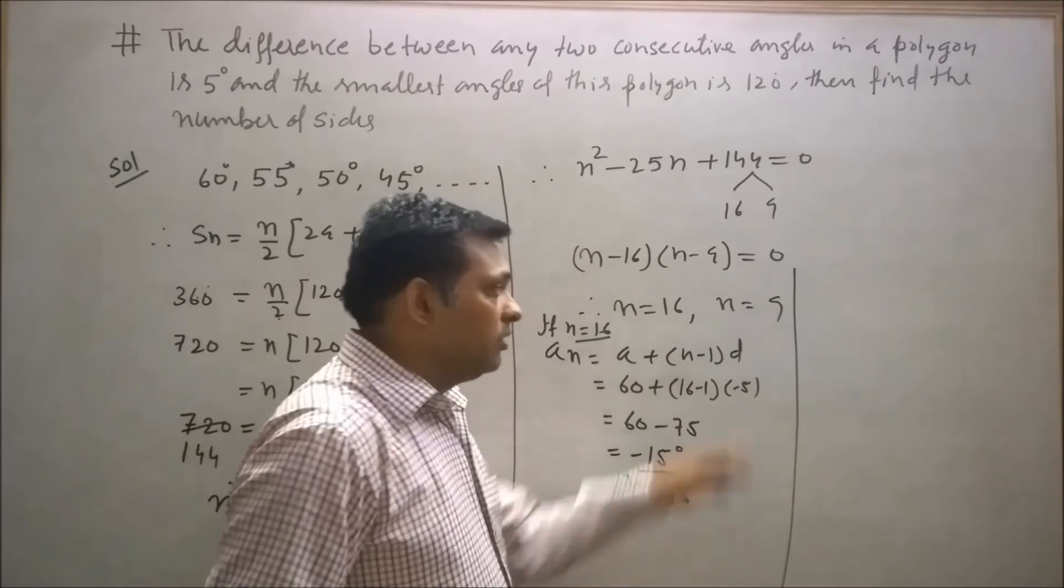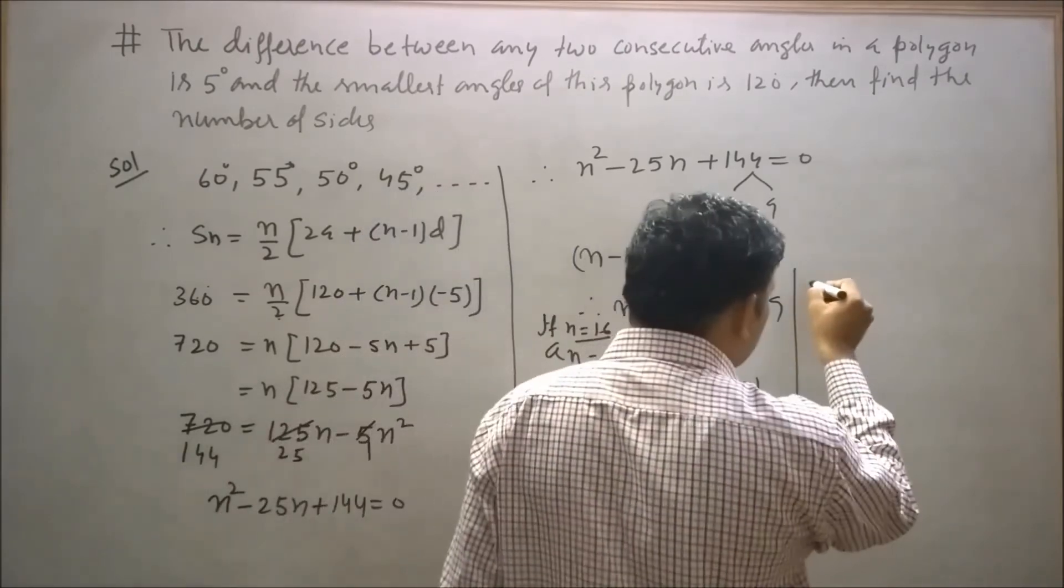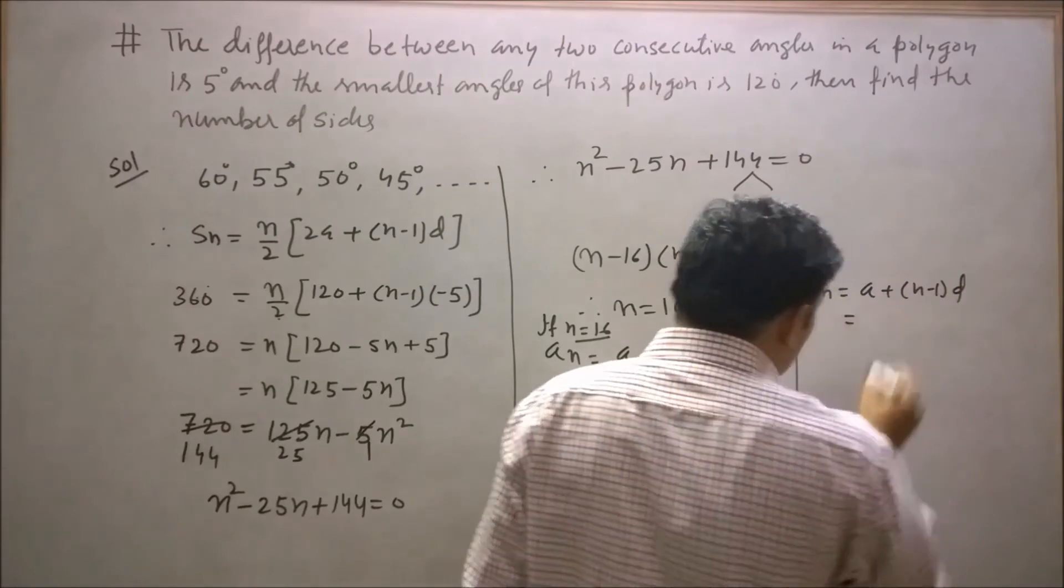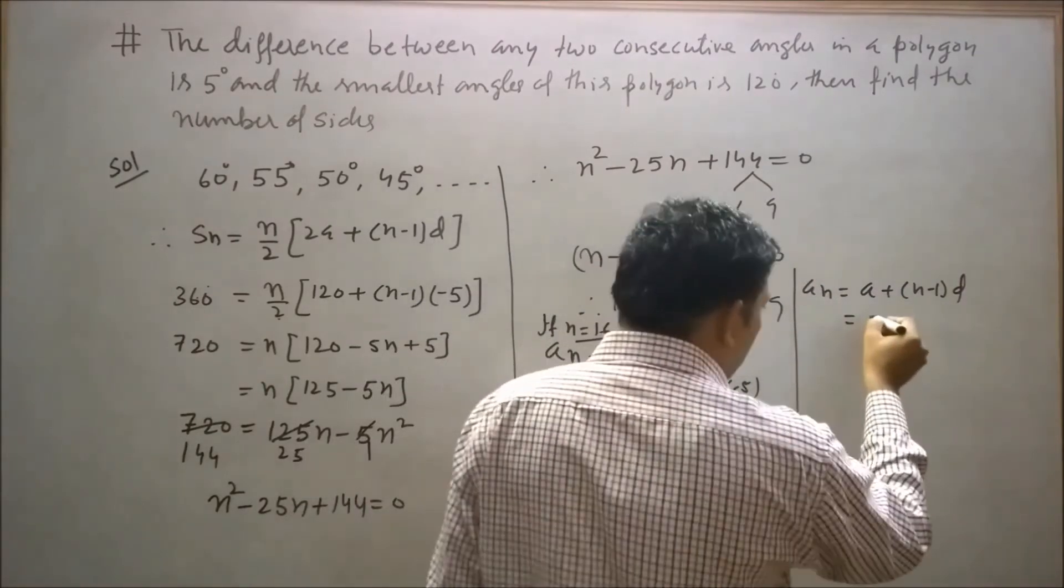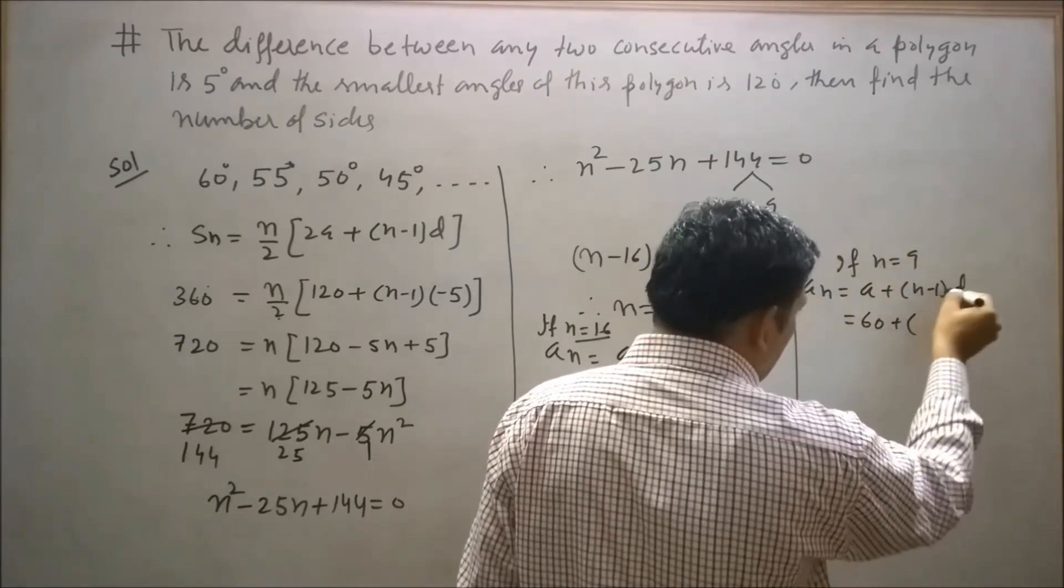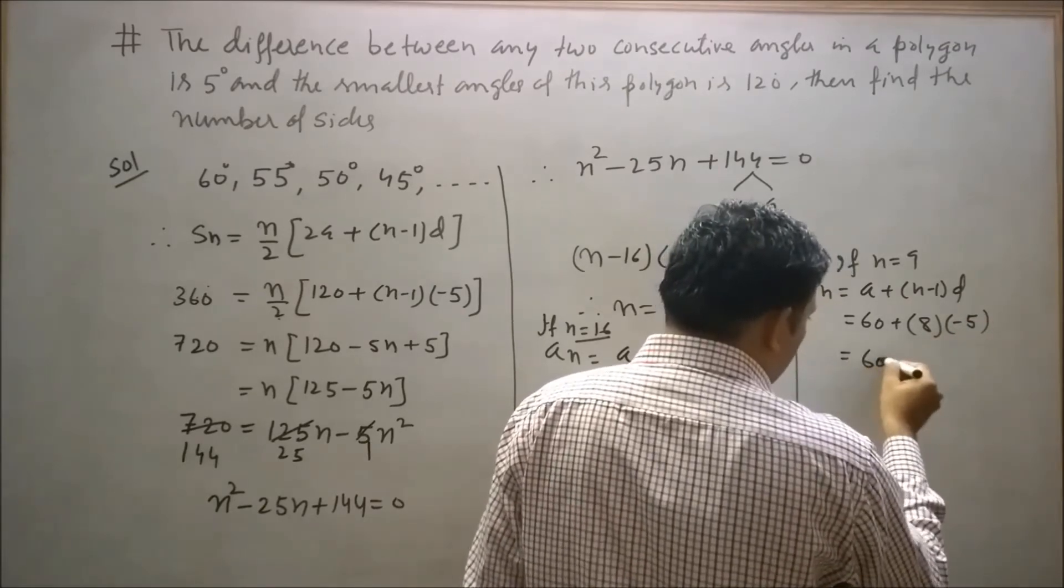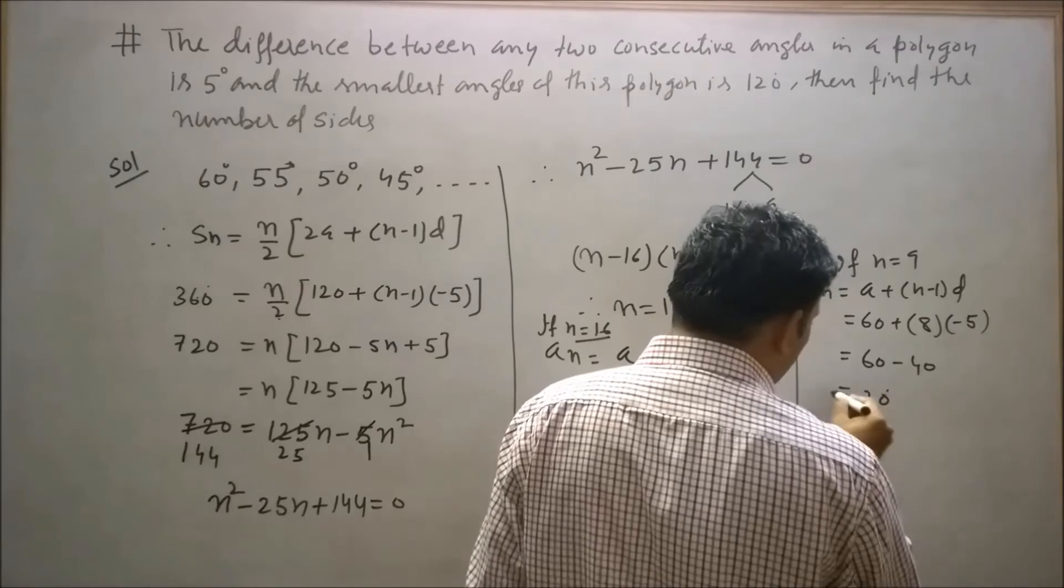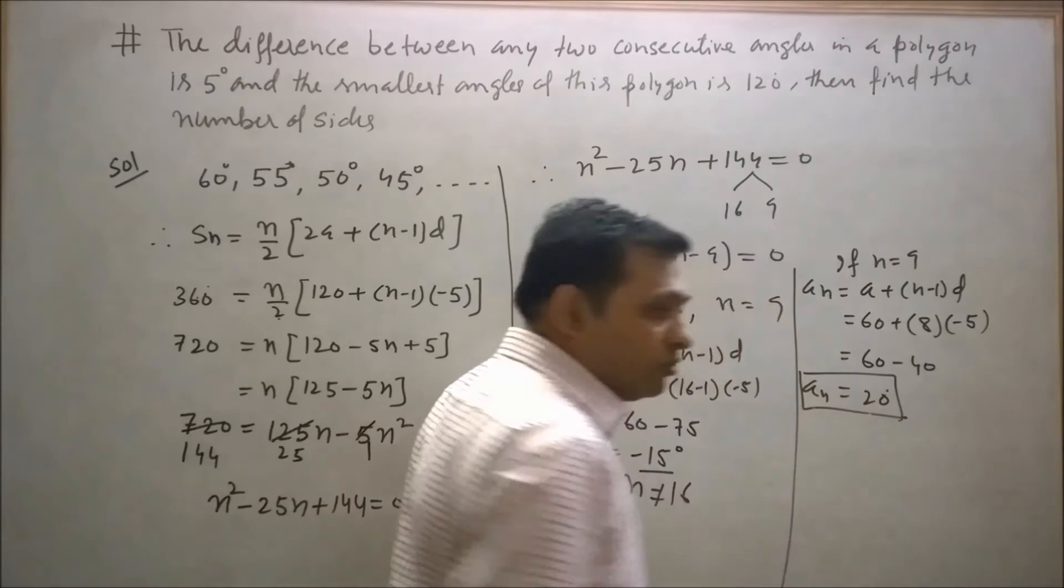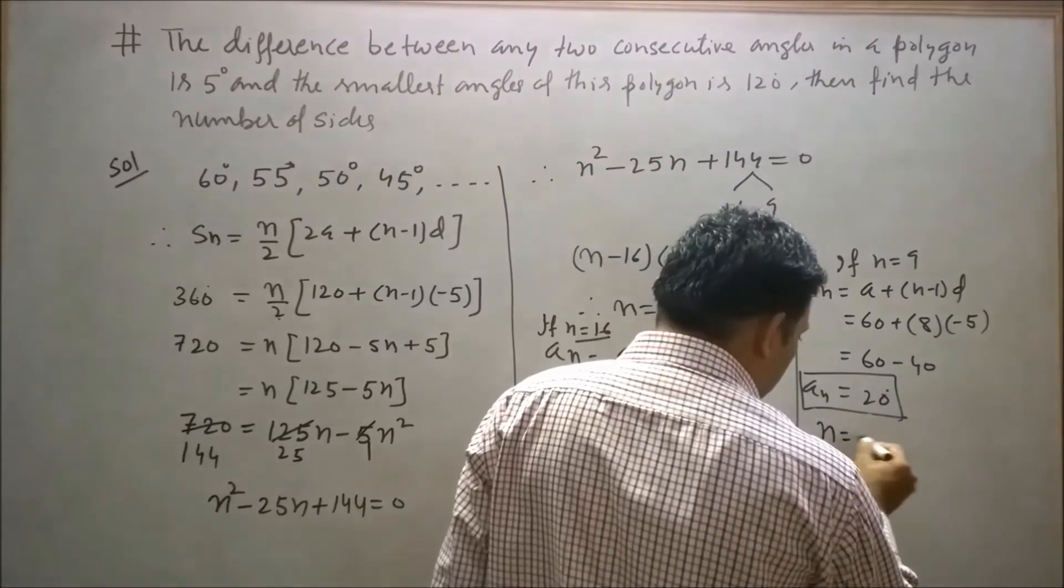Now put the value n = 9 in aₙ. The first term is 60, n is 9, so 9 - 1 = 8, d is -5. 60 - 40 = 20. So we get aₙ = 20. It means the last exterior angle will be 20 degrees. So we can say n = 9.